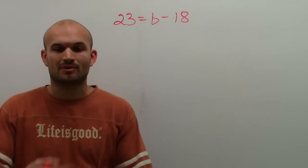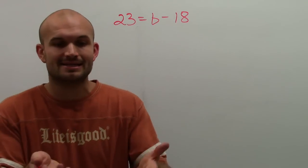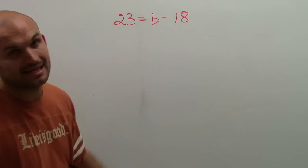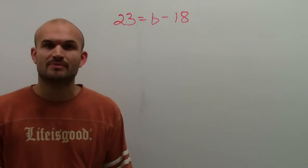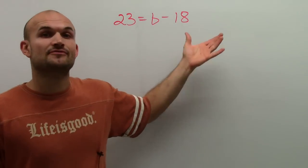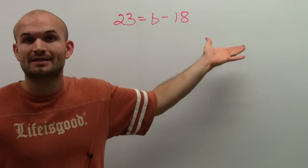What is happening to my variable? I need to isolate it, right? I need to get my variable by itself. So I have b minus 18. Well, what is happening to my variable? Here, it's pretty obvious for you to see that b is being subtracted from 18.